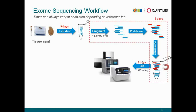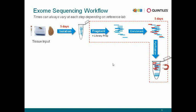After that, you want to think about pooling. You have to quality control the libraries, make sure they're good, and make sure you understand what inputs you have to normalize them to get maximal yield. From there, you can put it on your sequencer of choice.